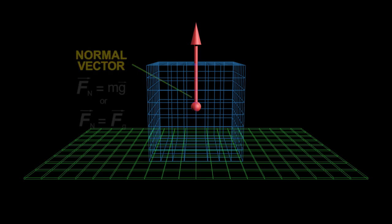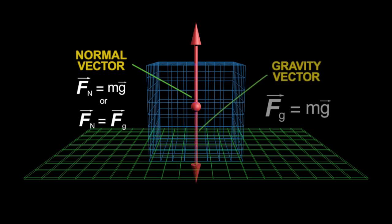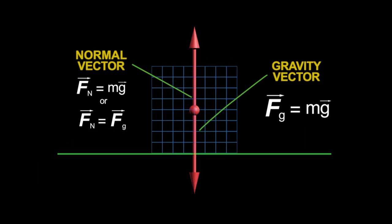The second force acting on the box is the normal force, the perpendicular contact force. The magnitude of the normal vector is equal to, but in the opposite direction, of the gravity vector. The two force vectors cancel each other out, creating a balance of forces that keeps the object at rest.